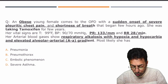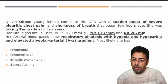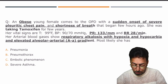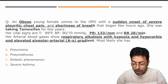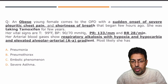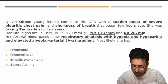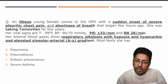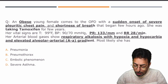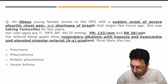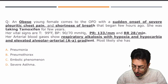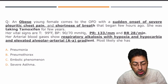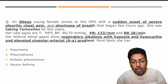The question states: An obese young female comes to the OPD with a sudden onset of severe pleuritic chest pain and shortness of breath that began few hours ago. She was taking Tamoxifen for a few years. Vital signs are given with some underlined values — pulse rate is increased at 133 per minute and respiratory rate 28 per minute. So the obese patient is presenting with sudden onset of severe pleuritic chest pain and shortness of breath with tachycardia and tachypnea.